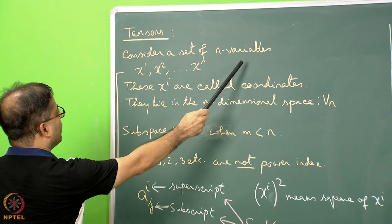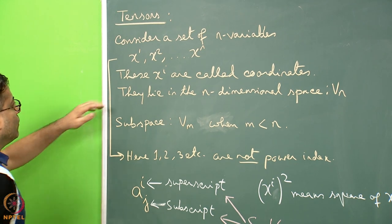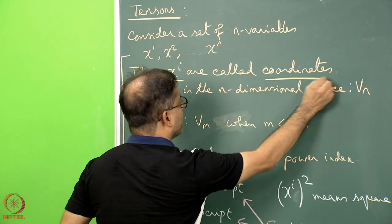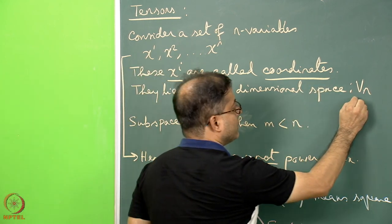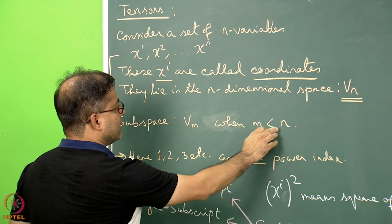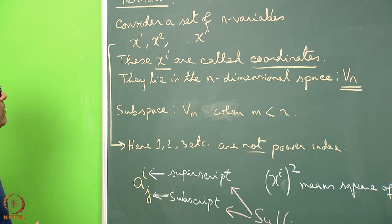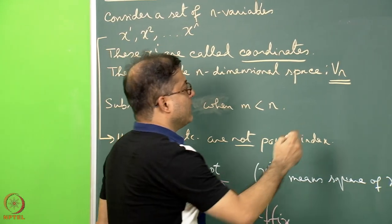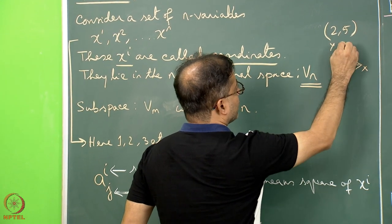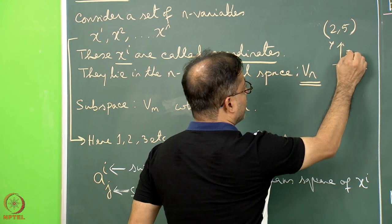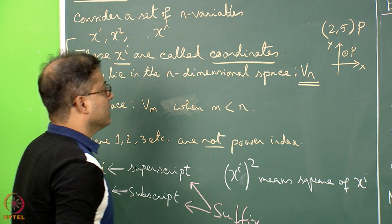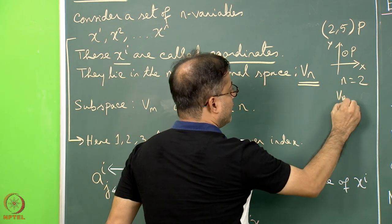Consider a set of n variables x1, x2 up to xn. I am not calling this as x-squared or x to the power n. These xᵢ are called coordinates and they lie in the n-dimensional space, which can be symbolized as Vn. We can define a subspace Vm where m is less than n. For example, a coordinate (2, 5) in the xy coordinate system in two dimensions — this point P falls within the xy plane, within the two-dimensional space.